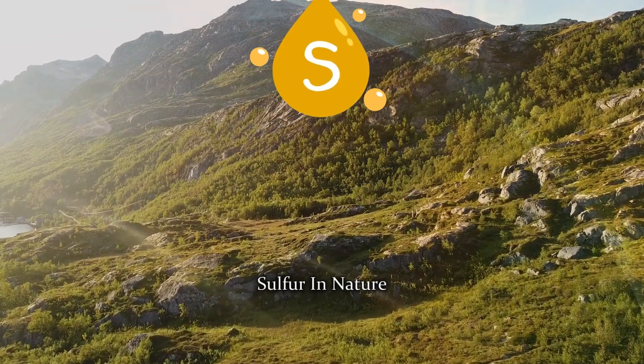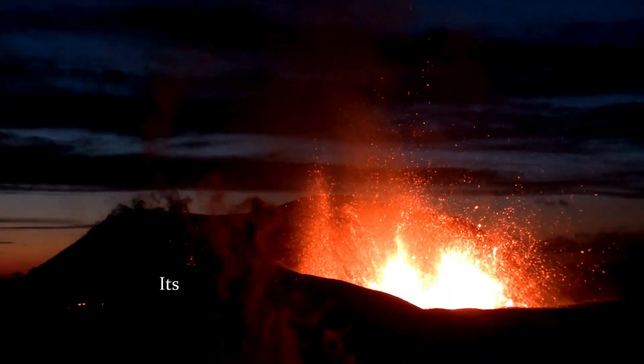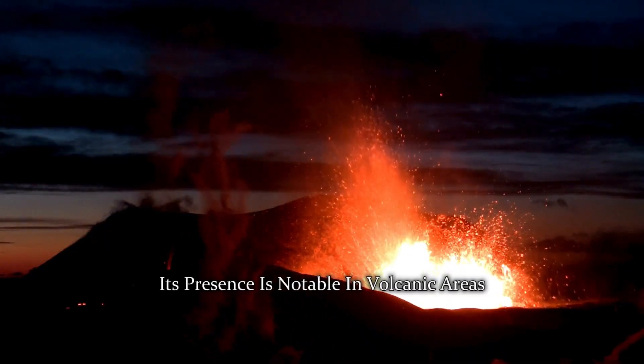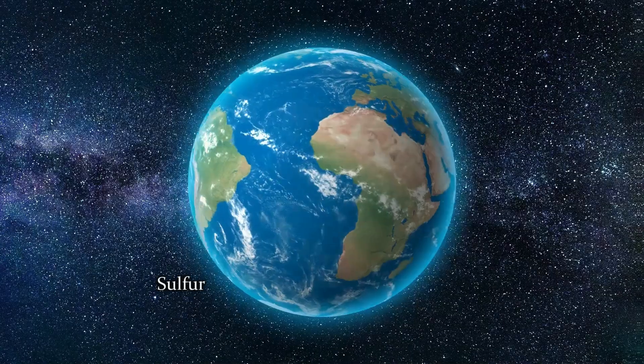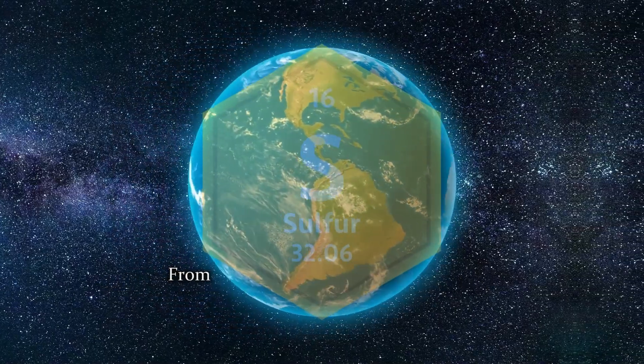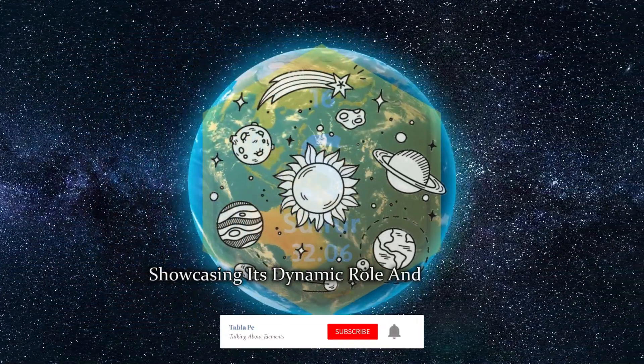Sulfur in nature. Abundant in the Earth's crust, sulfur is a geological architect. Its presence is notable in volcanic areas, where it contributes to the formation of minerals like gypsum and sulfur deposits. Sulfur cycles through the Earth's systems, from underground reservoirs to the atmosphere, showcasing its dynamic role in shaping the planet.